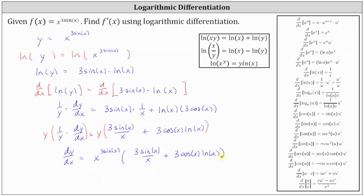Now let's replace dy dx with f prime of x, since that's what the question asked for. We factor out the greatest common factor of three from the parentheses and write the final derivative as f prime of x equals three times x to the power of three sine x, times the quantity sine x divided by x plus cosine x times natural log x.